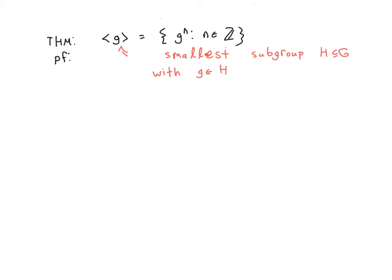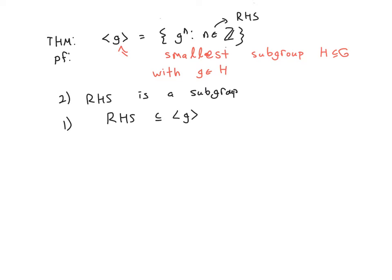I already claim, and I'll have a proof that's optional in a much later video, that the smallest subgroup exists. In other words, there is in fact a group that contains little g, and there's the smallest such group. So what do we need to claim? We need to claim that this set is a subset of that group, and that this set is a group. Let's call this set on the right-hand side just 'right-hand side' for now. So we need to show that the right-hand side is a subgroup. We're actually going to do that second, but first we're going to prove that the right-hand side is contained in the smallest subgroup containing the element g.